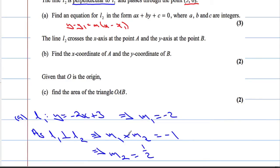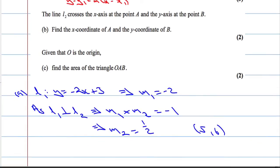So, we have the gradient, we have the point. The point is (5, 6). We're going to use the formula now. y minus y1 equals M times x minus x1. Got to know this off by heart.